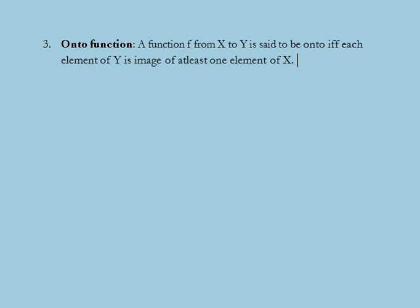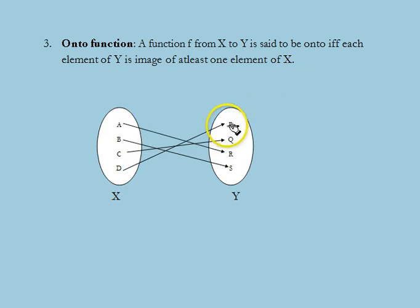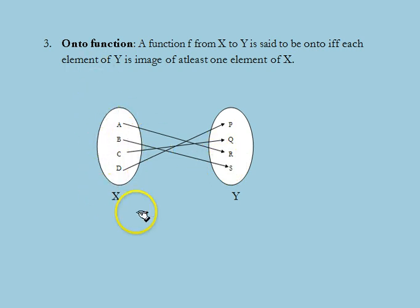Next we consider the onto function. A function f from x to y is called onto, or a surjection, if and only if each element of y is the image of at least one element of x — that is, if and only if the co-domain of f equals the range of f. In this example, each element of y is the image of at least one element of x, therefore this represents an onto function.